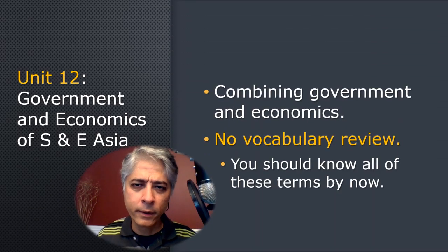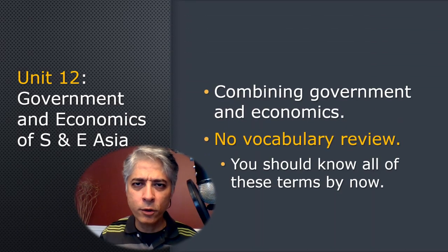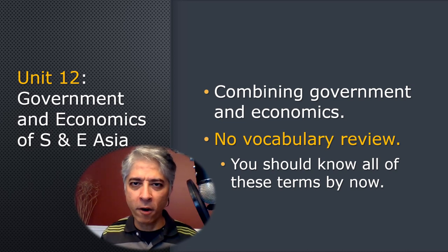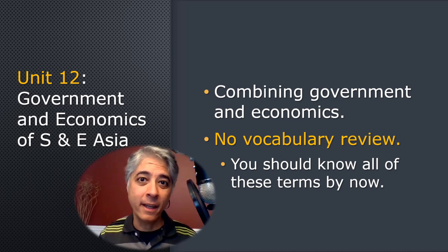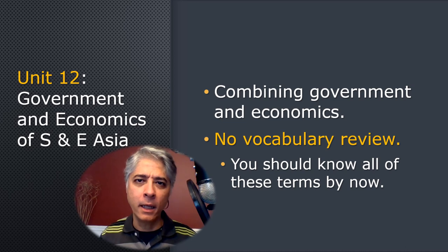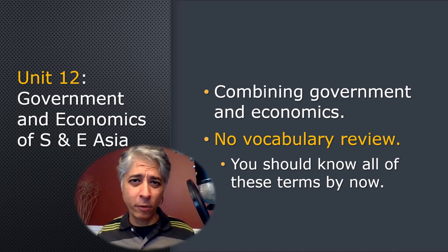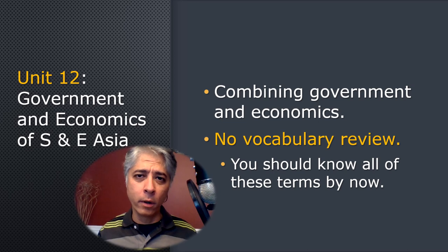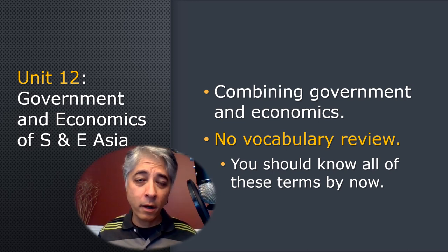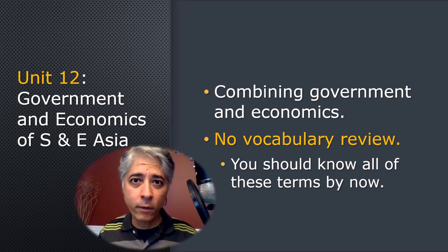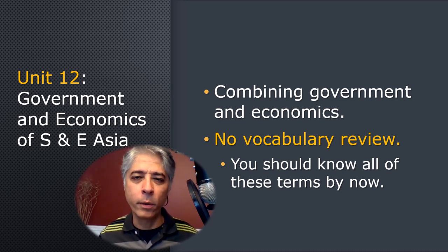Something to know about Unit 12 is that we are combining government and economics. One of the ways we're able to do that is by skipping any vocabulary review. We've covered the vocab for government and economics twice already this year, and you covered this to a large degree in sixth grade as well. So no vocabulary review this time.